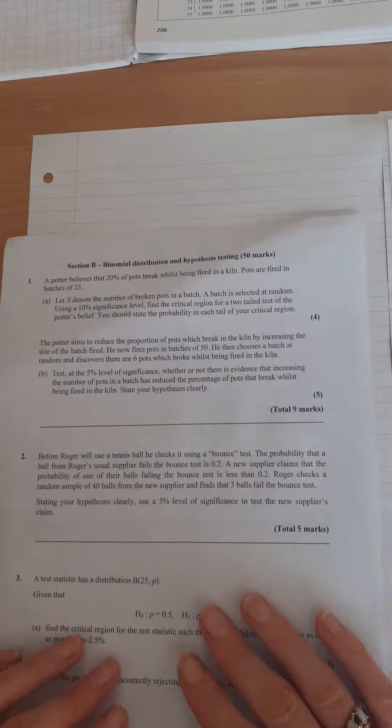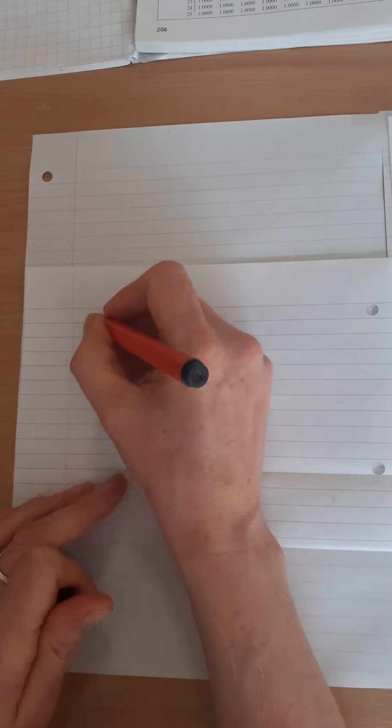So first thing I wanted you to do was just remind ourselves what critical region is by looking at a really common example, something you're really familiar with, which is tossing a coin.